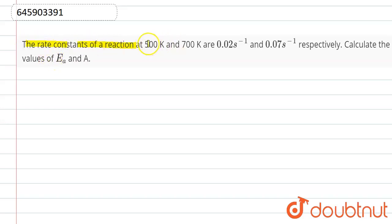The rate constants of reactions at 500 and 700 Kelvin are 0.02 per second and 0.07 per second respectively. Calculate the values of Ea and A.